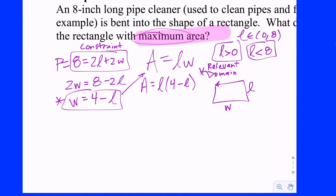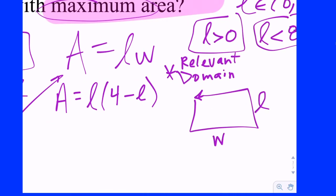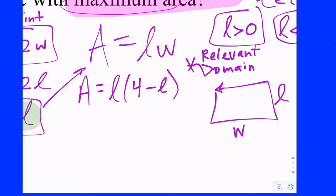We chose to solve for W, so W is four minus L. That equation I put an asterisk by because in the end, once we find L, we'll need to come back there to find W. But right now, we plug it into our primary equation and we get area equals L times (four minus L). Now we have it as a function of L.